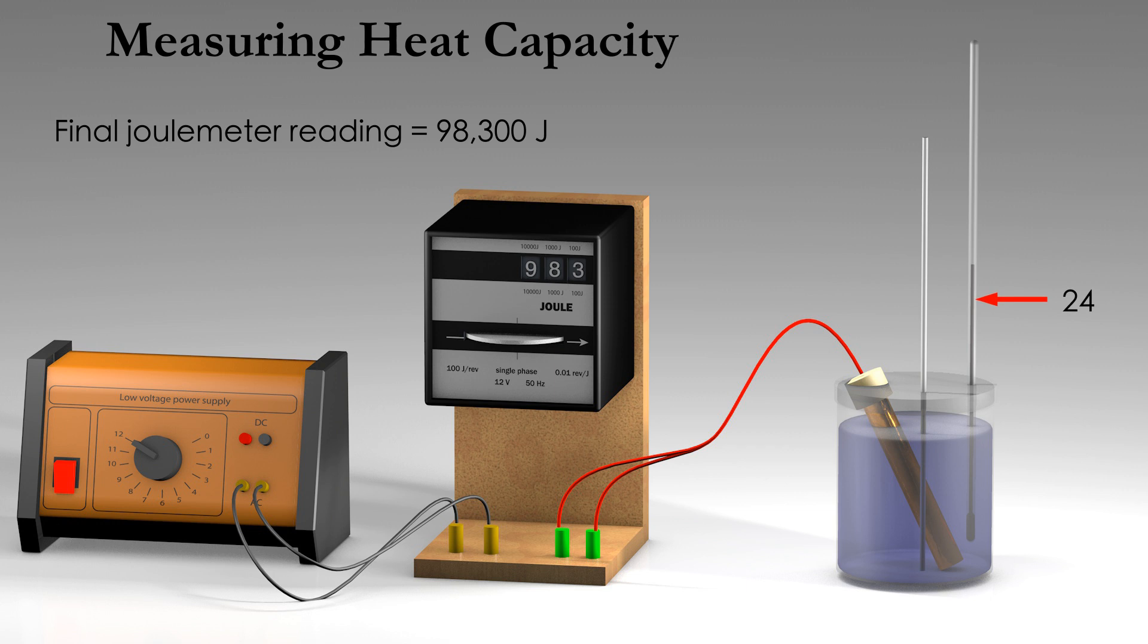Record the final joulemeter reading, which is 98,300 joules. Since the heater is still hot, the temperature of the lemon tea keeps rising even though the power supply is turned off. We have to wait until the maximum temperature of the lemon tea is reached.